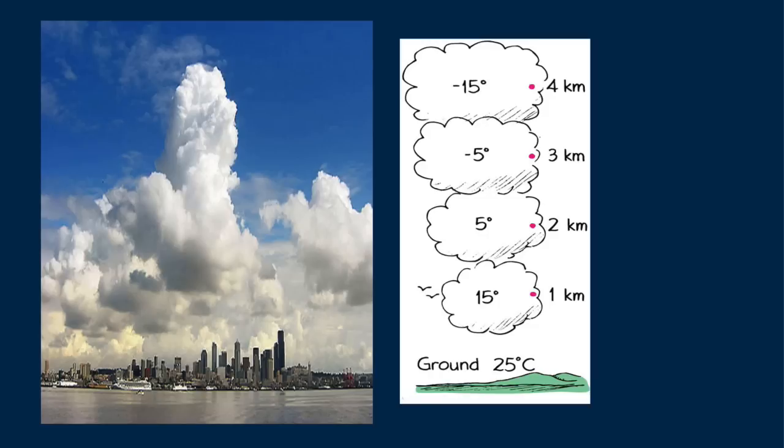Measurements show that the temperature of a parcel of dry, expanding air can decrease by 10 degrees Celsius, for a decrease in pressure that corresponds to a 1 kilometer increase in elevation. So dry air cools 10 degrees Celsius for each kilometer it rises.